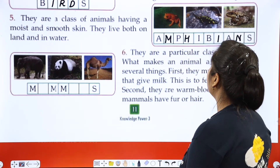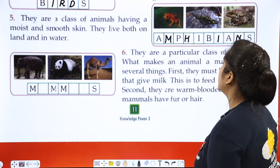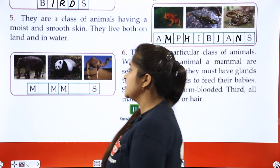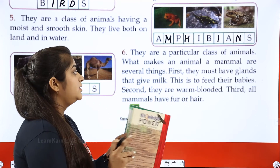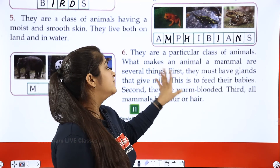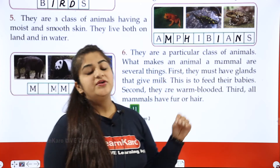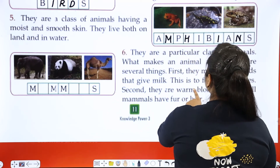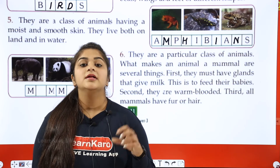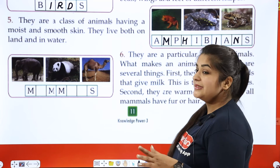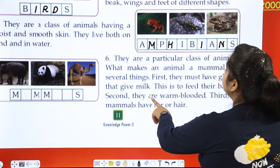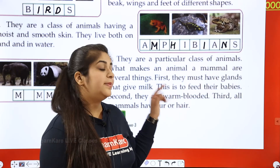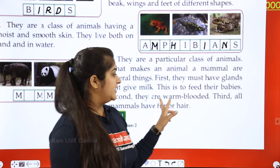The last class is mammals. What makes an animal a mammal are several things. First, they must have glands that give milk — to feed their babies. Second, they are warm-blooded. Third, all mammals have fur or hair. Warm-blooded means these animals do not change their body temperature according to the surrounding temperature.